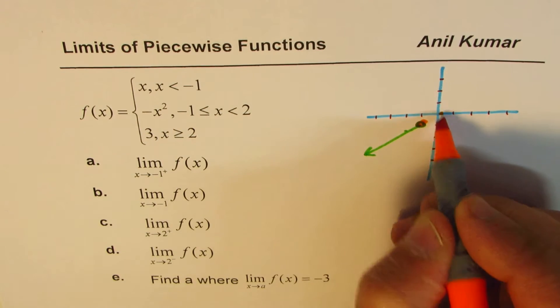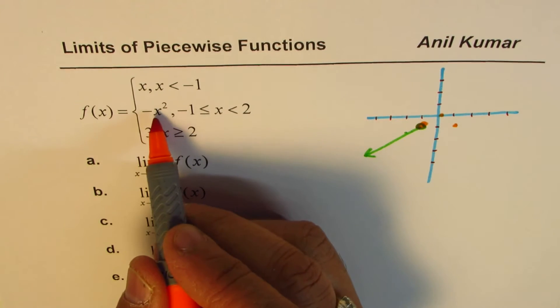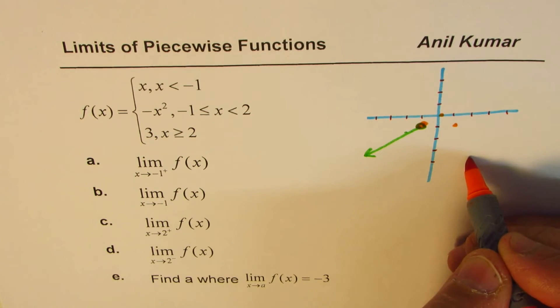At 0, it is going to be 0. At 1, -1. At 2, 4 minus 4, right? So at 2, it is going to be 1, 2, 3, 4, kind of here.